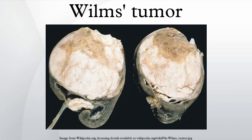Also, a stage V tumor is not necessarily worse than a stage IV tumor. Epidemiology. People of African descent have the highest rates of Wilms tumor. Most instances of cancer occur among children between 3 to 3.5 years old. A genetic predisposition to Wilms tumor in individuals with aniridia has been established, due to deletions in the p13 band on chromosome 11.